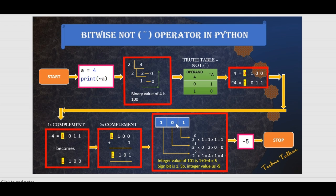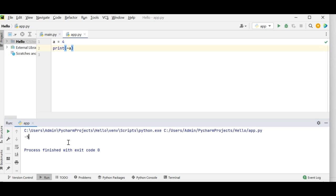Next, we convert it back to the integer value. We have 1, 0, 1. So 1 is multiplied by 2 to the power 0, which is 1 × 1 = 1. Then 0 is multiplied by 2 to the power 1, which is 2 × 0 = 0. And 1 is multiplied by 2 to the power 2, which is 4 × 1 = 4. Summing these: 1 + 0 + 4 = 5. But we have a sign bit of 1, which indicates it is a negative value, so the integer value 5 becomes minus 5. This is the result we got in Python as well.